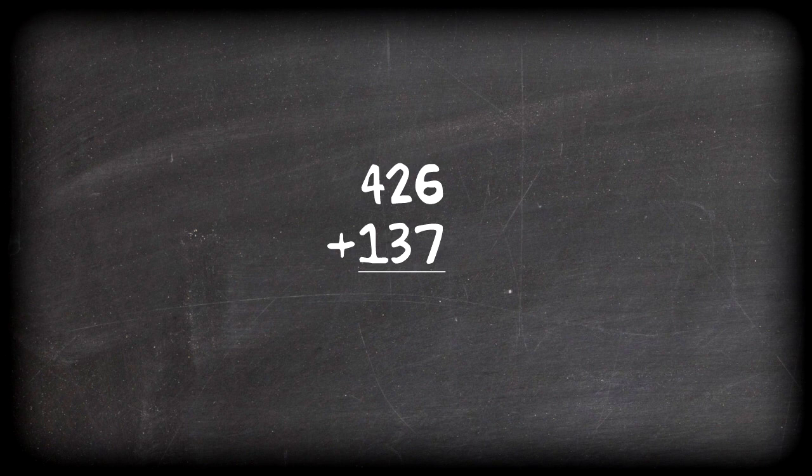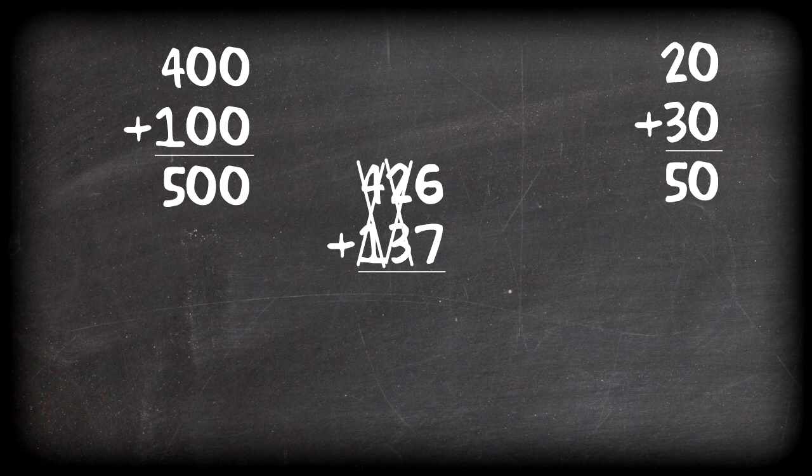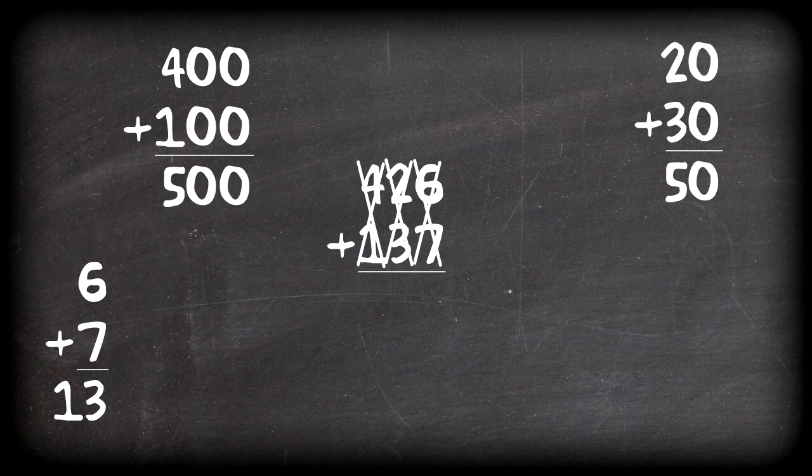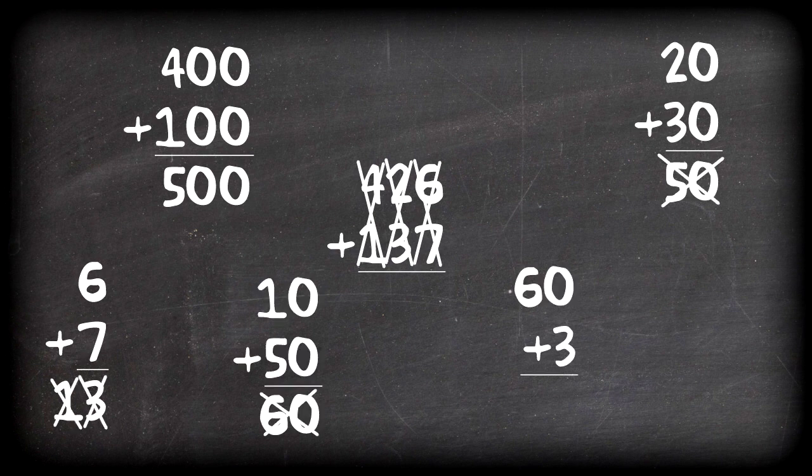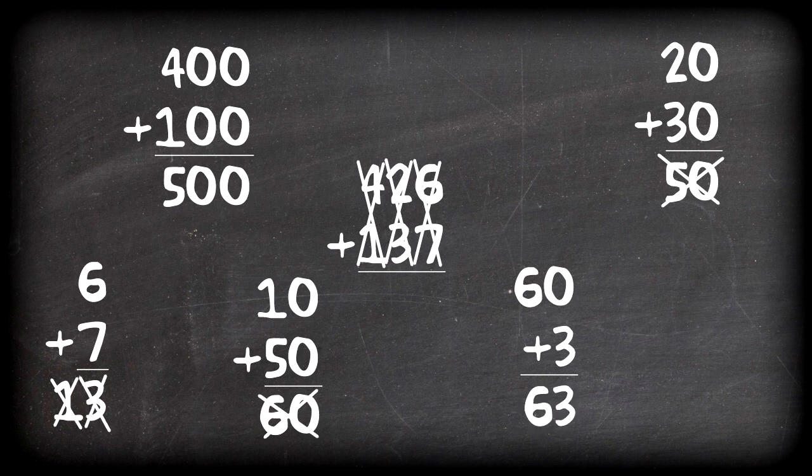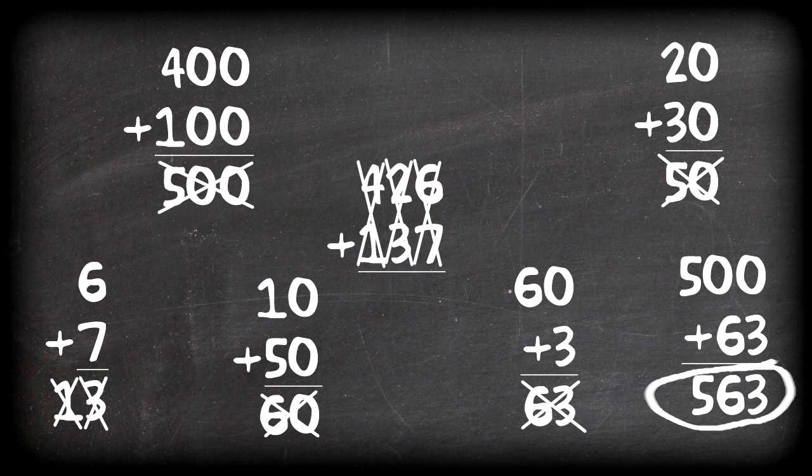First, you add 400 to 100 to get 500, then you add 20 to 30 and get 50, then you add 6 and 7 to get 13, then you add 10 to 50 and get 60, then add 3 to 60 and get 63, then add 63 to 500 and get 563. See?